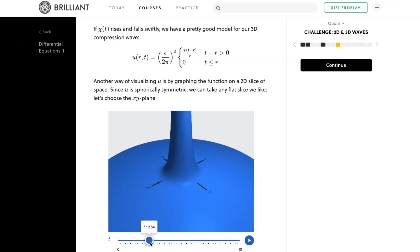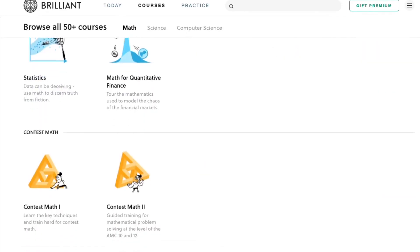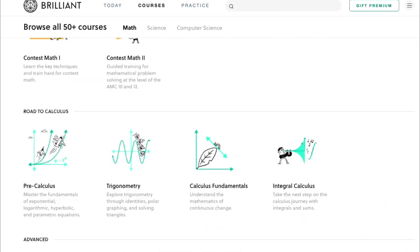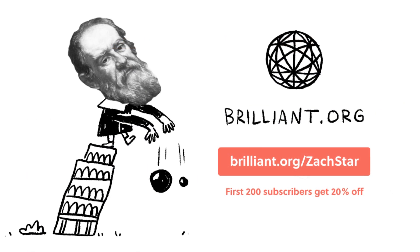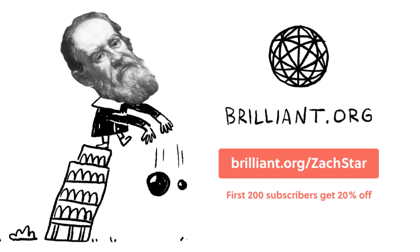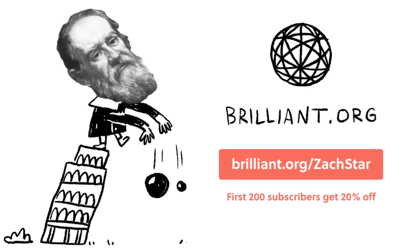But, no matter what you're learning, they have dozens of other courses in math, science, and engineering to choose from. So, if you want to get started right now and support this channel, you can click the link below or go to Brilliant.org slash Zach Star, and the first 200 people to sign up will get 20% off their annual premium subscription.